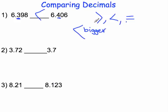For number 2, we are comparing 3 and 72 hundredths to 3 and 7 tenths. Let's go ahead and first compare the ones digit. They both have a 3, which are equal, so next we are going to move to the tenths digit.